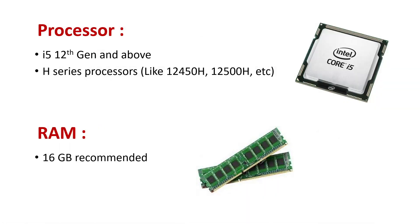So what are the key points to consider before buying a laptop as a civil engineering student or professional? The processor in your laptop should be at least an i5 12th gen or Apple. There are various types of processors — you should go for those whose name ends with H, for example 12450H or 12500H. These processors are made for high-performing tasks. They are basically gaming processors but are good for multitasking, architecture, and 3D work.